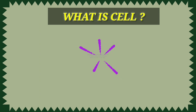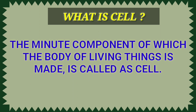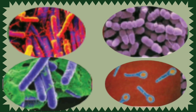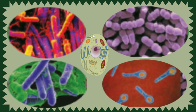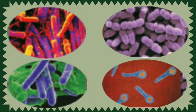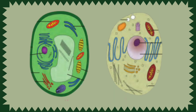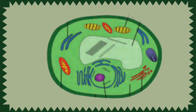Compound microscope or electron microscope is used for the observation of cells. What is shell? The minute component of which the body of living things is made is called as shell. Shell is the smallest unit of life which can survive independently. Shell is called as the basic structural unit of life. Friends, shell contains many small organs which help the shell to carry out various functions.